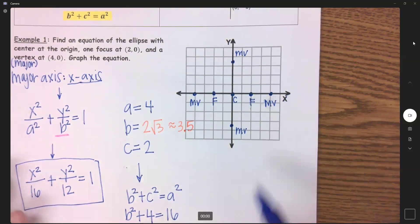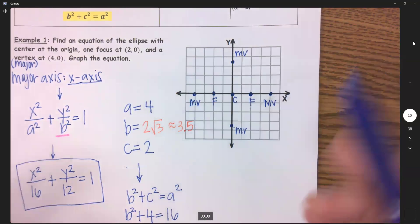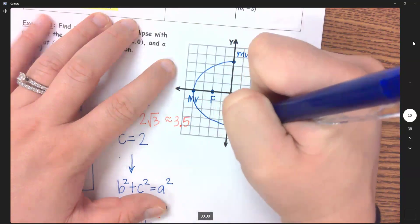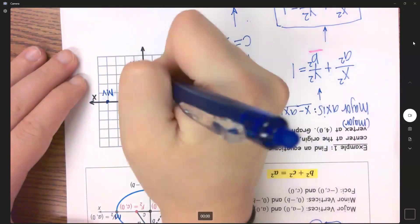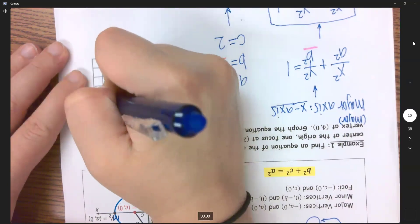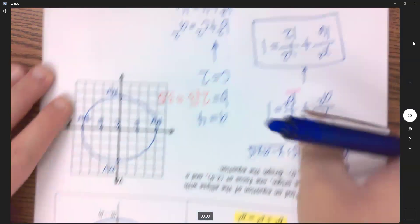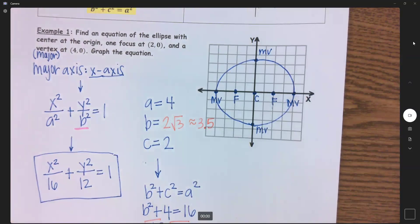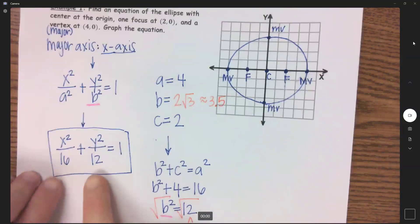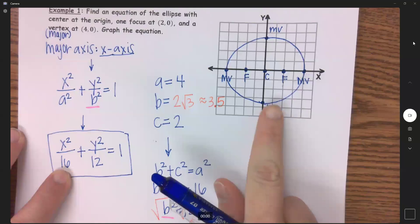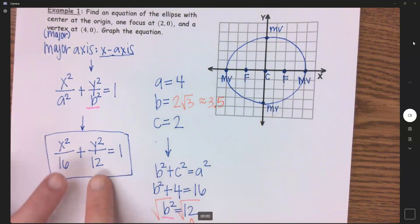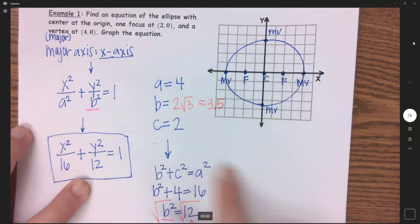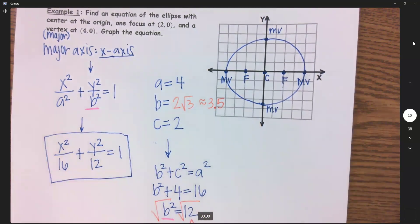So now let's make our ellipse. We're going to connect our minor and major vertices all together. Now, this almost looks like a circle. The closer that these two numbers here are together, the more circular this is going to get. So the further and further these numbers get apart from each other, the skinnier and more oval-like shape you're going to get.